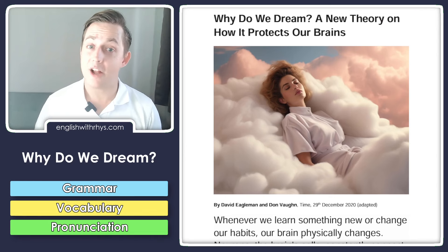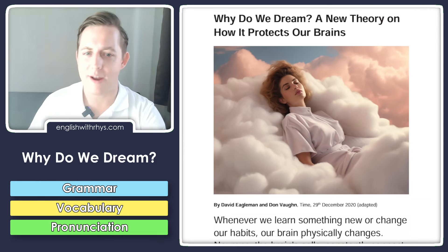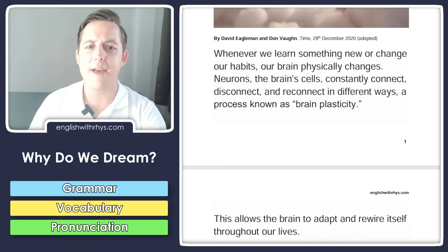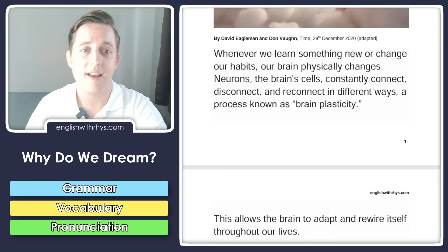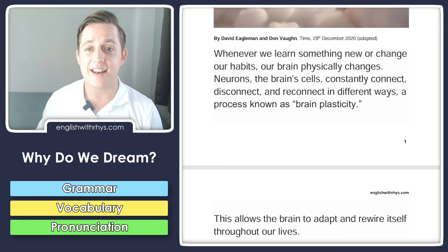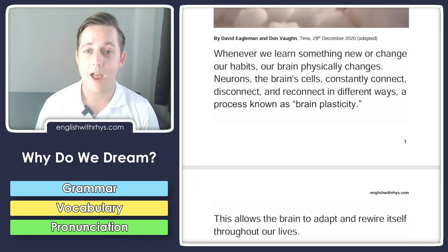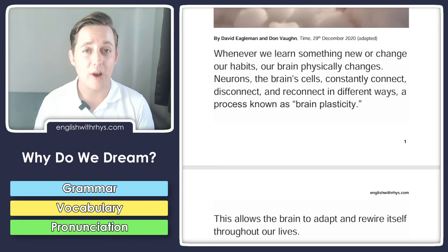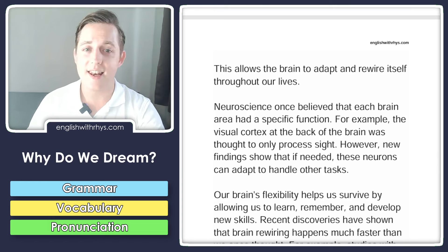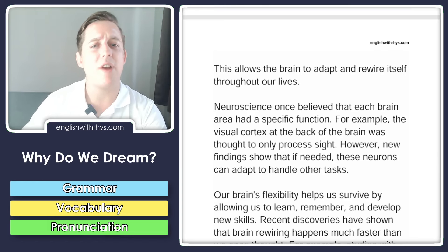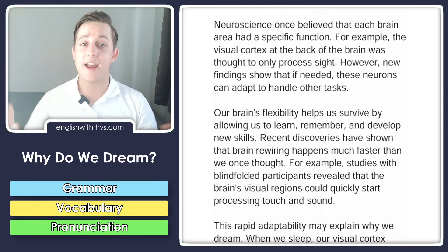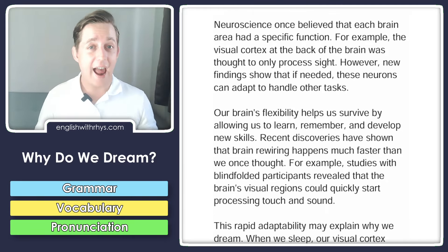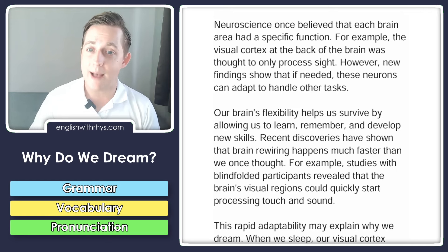Why do we dream? A new theory on how it protects our brains. Whenever we learn something new or change our habits, our brain physically changes. Neurons, the brain cells, constantly connect, disconnect, and reconnect in different ways — a process known as brain plasticity. This allows the brain to adapt and rewire itself throughout our lives. Neuroscience once believed that each brain area had a specific function.